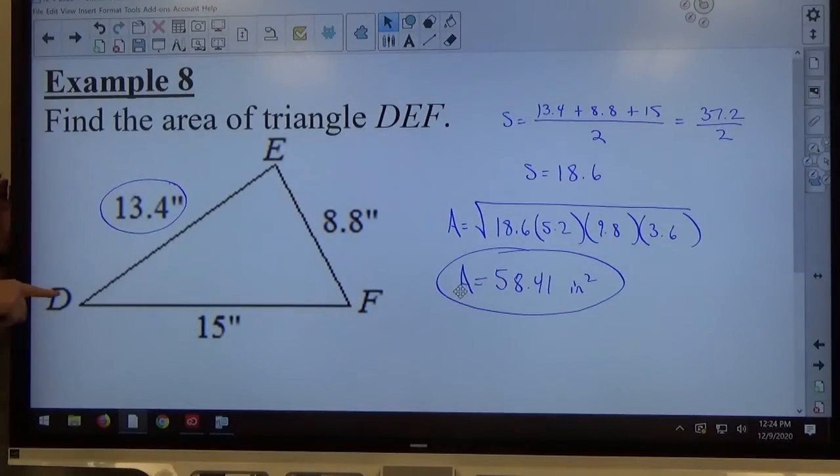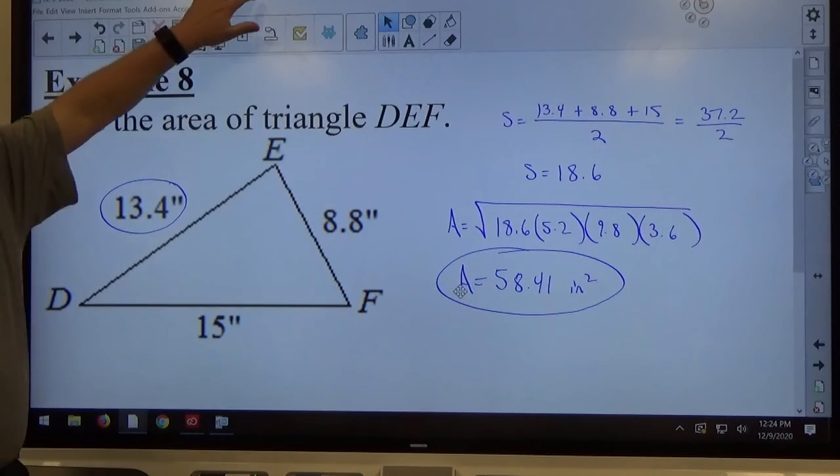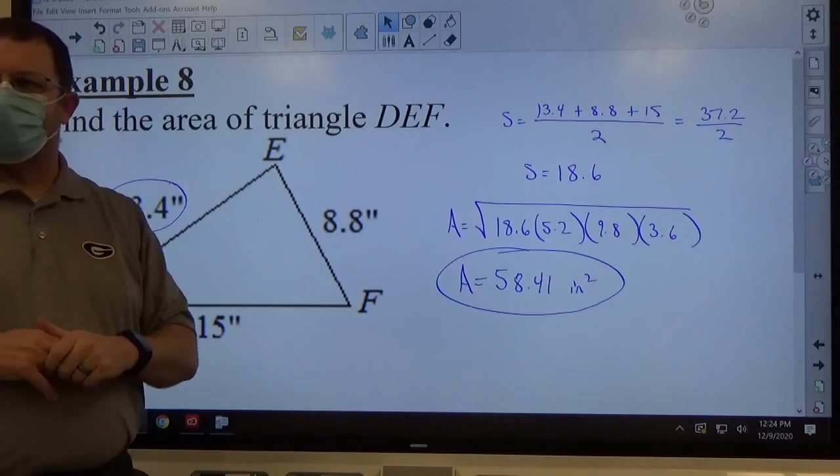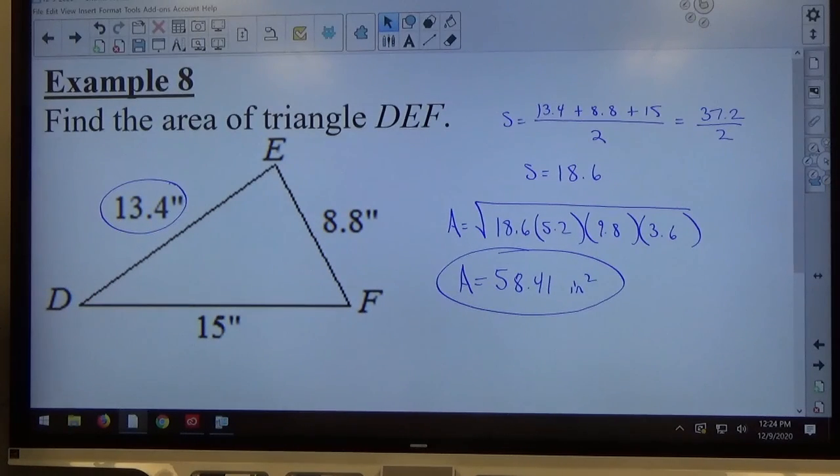If they're using a little quotation mark to show inches, there's no quotation mark squared. So make sure you write IN squared, not quotation marks squared. I've seen people trying to do that in the past. It doesn't really have any meaning, so make sure that you're using IN squared for your square inches units.